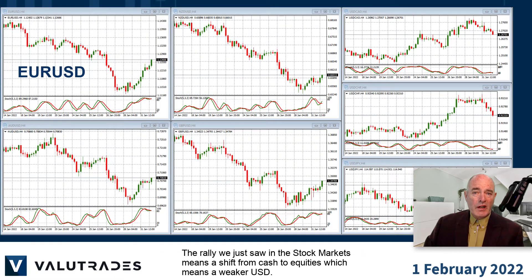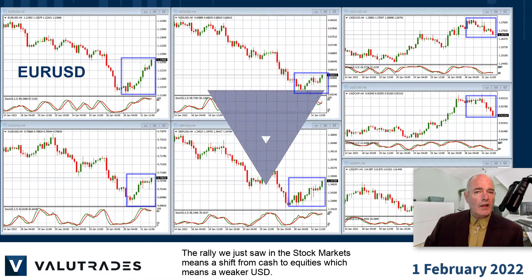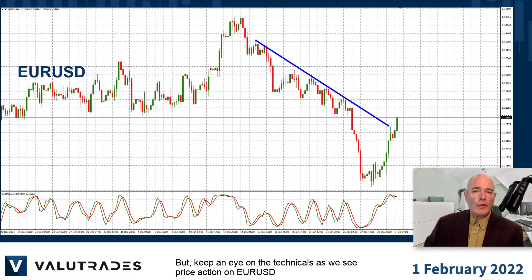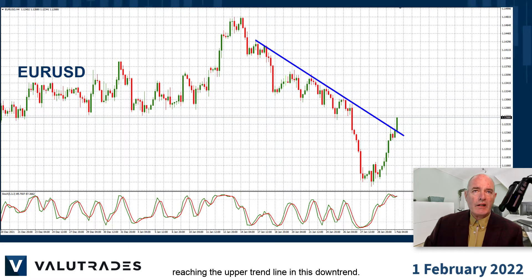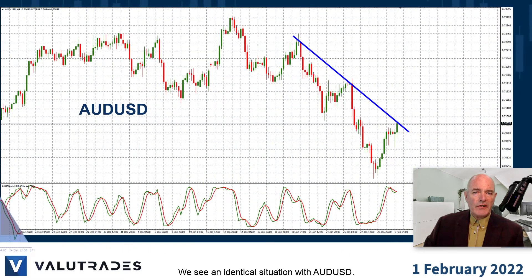The rally we just saw in the stock markets means a shift from cash to equities, which means a weaker US dollar. But keep an eye on the technicals as we see price action on EURUSD reaching the upper trend line in this downtrend. We see an identical situation with AUD.